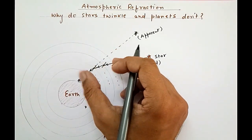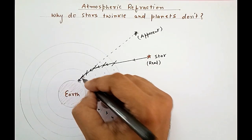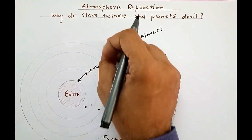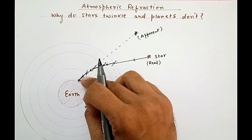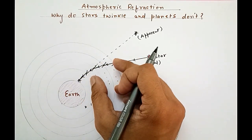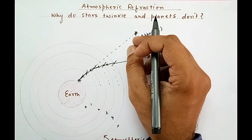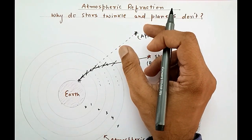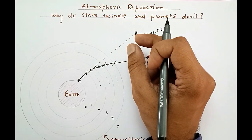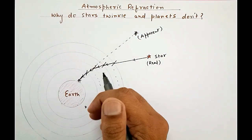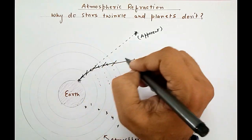When some of the layers become thicker, the light entering the eye of the person becomes less, because the thickness causes lots of light to scatter in other directions. When the layers become thinner due to turbulence, more light enters the eye of the observer, so the star appears comparatively brighter. This is why stars sometimes appear brighter and sometimes fainter — that shining effect is why stars twinkle, due to refraction.